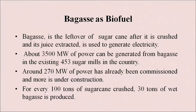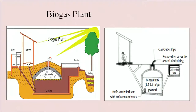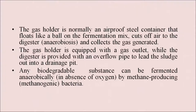For every 100 tons of sugarcane crushed, 30 tons of wet bagasse is produced. The biogas plant consists of two compartments: one is the digester or fermentation tank and the other is the gas holder. The digester is a cube-shaped or cylindrical waterproof container with an inlet into which the fermentable mixture is introduced in the form of a liquid slurry. The gas holder is normally an air-proof steel container that floats like a ball on the fermentation mix, cuts off air to the digester and collects the gas generated. The gas holder is equipped with a gas outlet, while the digester has an overflow pipe to lead the sludge out into a drainage pit.